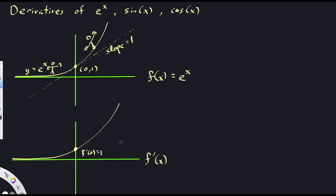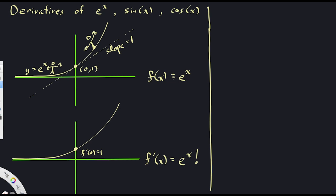So this is the graph of the derivative — and now I want to convince you that the derivative is in fact equal to e to the x. E to the x is not quite, but almost, the only function which is equal to its own derivative. If the function is e to the x, the derivative is e to the x. Why is this true? Let me give a little explanation for why the derivative is actually equal to the function in this case.